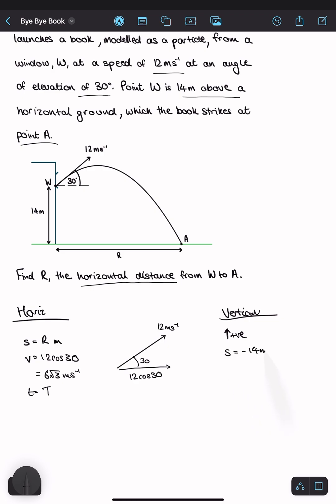So my displacement is equal to negative 14 meters because now it's going down. Our initial velocity upwards, I can just use this trick. This is it. So that's 12 sin 30, which is equal to 6 meters per second.